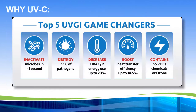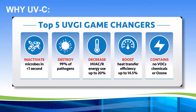In our epidemic task force, we have a whole section on germicidal UV. One of the things we talk about is we can inactivate things in less than a second — in the ETF, we said a quarter of a second is all we need. We can destroy 99% of pathogens. On the energy side, we can reduce energy use and boost heat transfer. These do not produce ozone and they're chemical-free. It's a really natural way to clean your coils constantly by putting a light in there 24-7, 365.